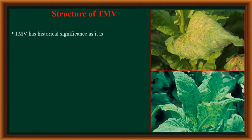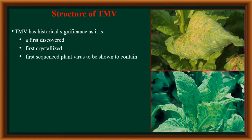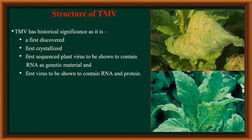The tobacco mosaic virus has great historical importance in the field of virology because it is the first discovered virus, it is the first crystallized virus, it is the first sequenced plant virus shown to contain RNA as a genetic material, and also it is the first virus shown to contain RNA and proteins as structural components. Because of all these reasons, this virus is said to be a virus with historical significance.